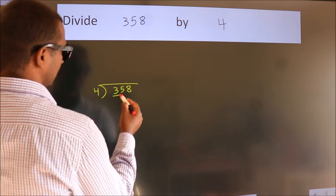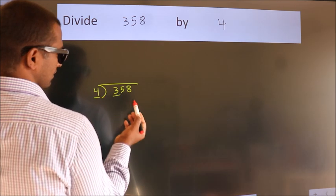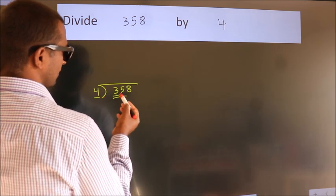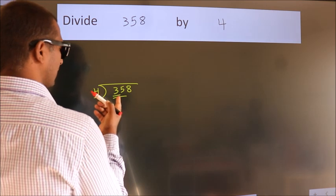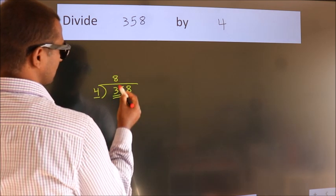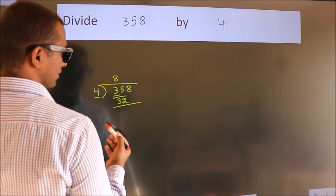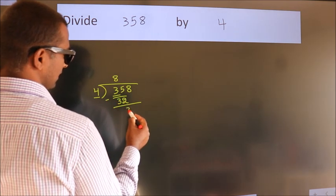Here we have 3, here 4. 3 is smaller than 4, so we should take 2 numbers, 35. A number close to 35 in the 4 table is 4 eights, 32. Now we should subtract. We get 3.